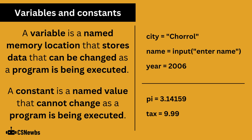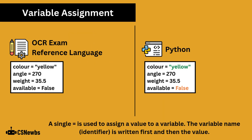A variable is a named memory location that stores data that can be changed as a program is being executed. A single equals is used to assign a value to a variable. The variable name, known as the identifier, is written first and then the value.